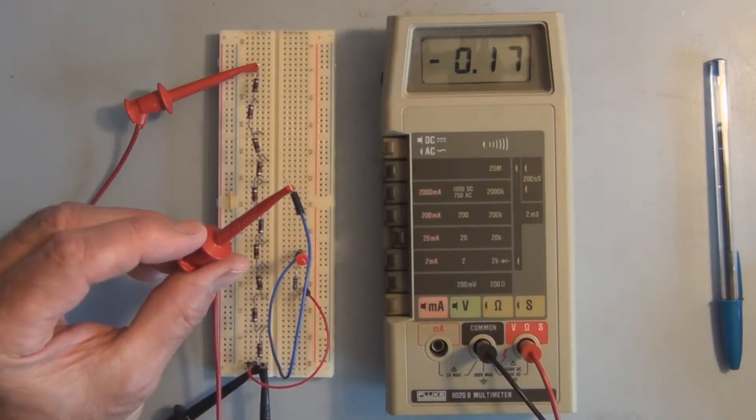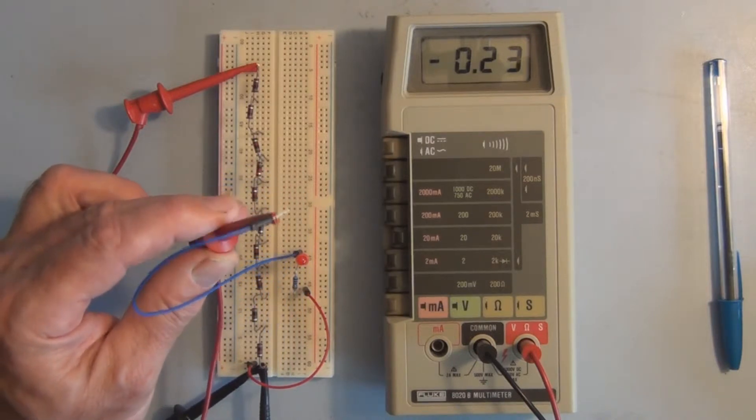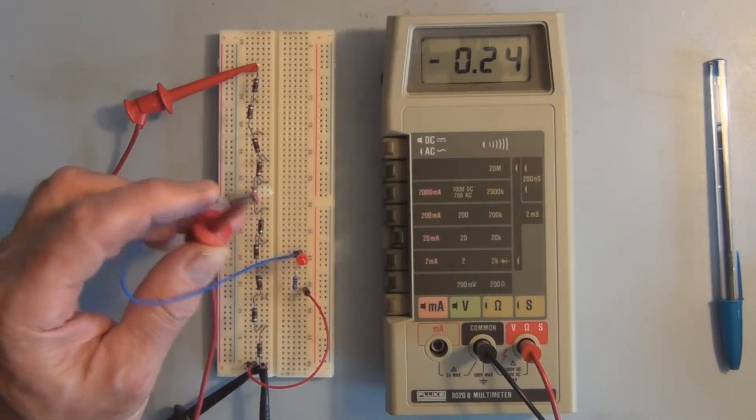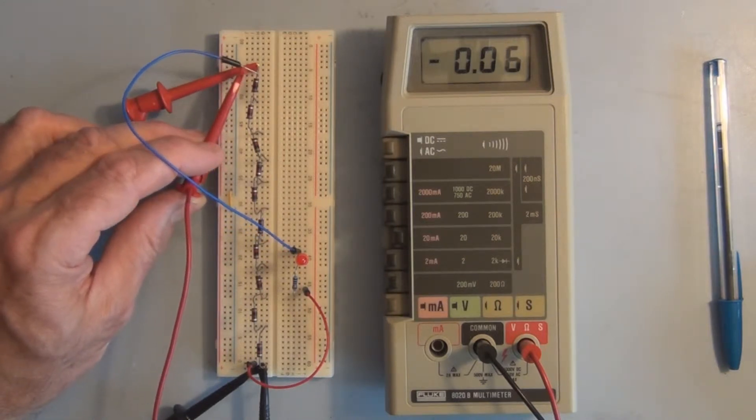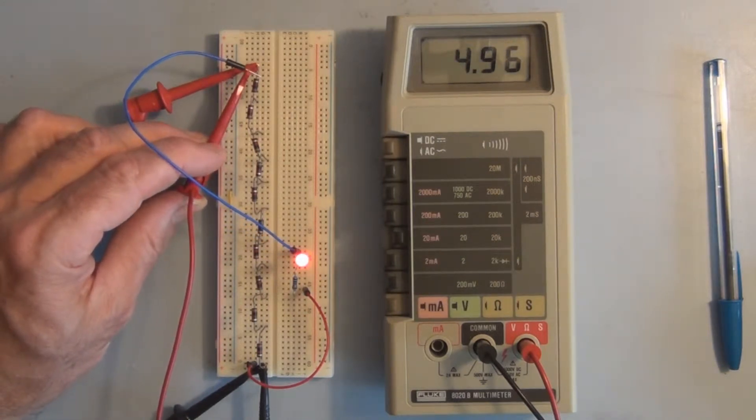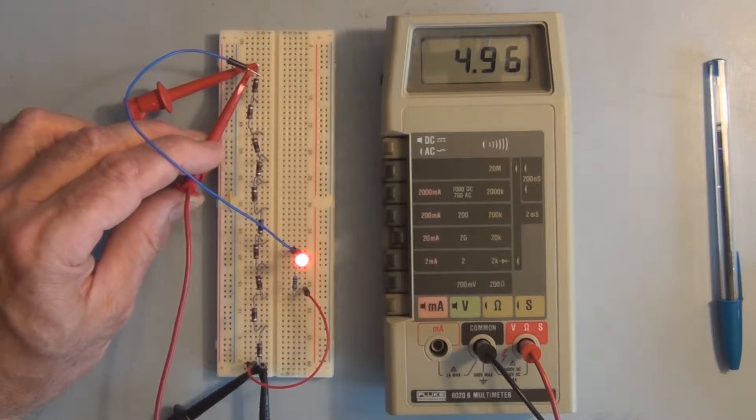So here I have my voltmeter attached to the lead that simulates the center lead of the potentiometer. And if I have it attached directly to the 4.96 volts or roughly 5 volts supply here, we have the maximum brightness on the LED.